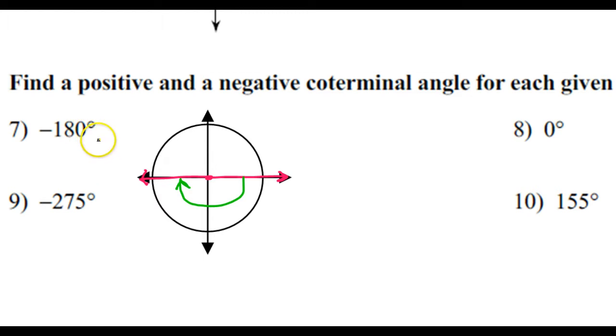So basically, if I want to get back to the same place, I'm either adding or subtracting multiples of 360 degrees, because an additional 360 degrees would take me all the way back around and back to where I started from.